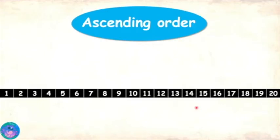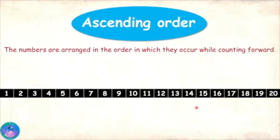Well, in ascending order, the numbers are arranged in the order in which they occur while counting forward. So I'll just count forward. Whichever number comes first, I will write that first and so on.